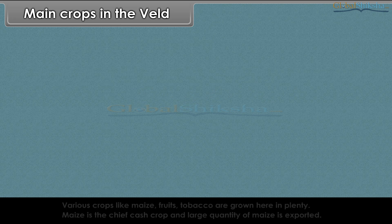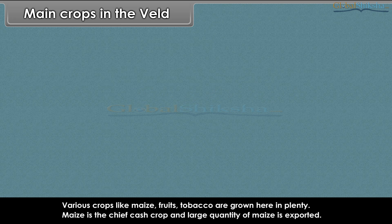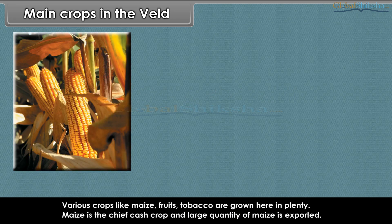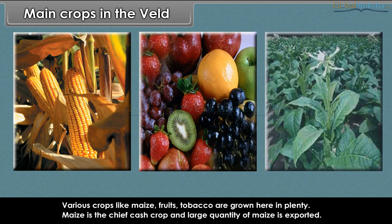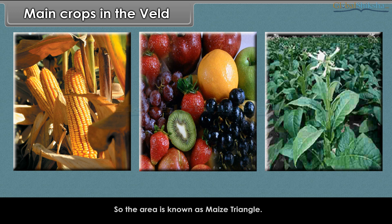Various crops like maize, fruits, and tobacco are grown in the Veld in plenty. Maize is the chief cash crop and a large quantity of maize is exported, which is why the area is known as the maize triangle.